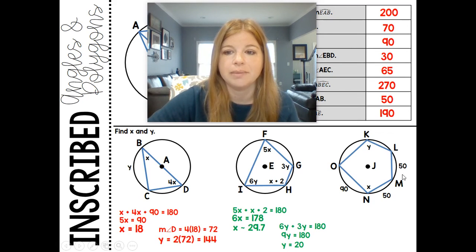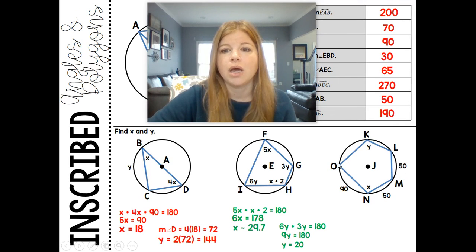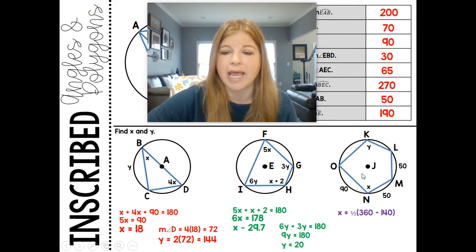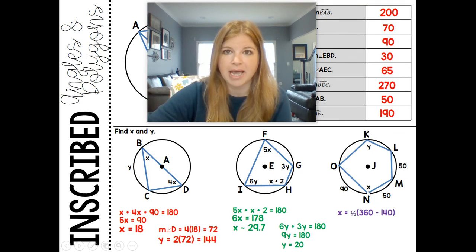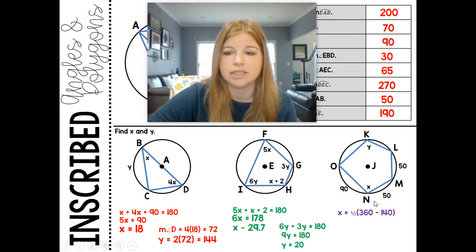Last one: an inscribed pentagon. We want to find the measure of angle X. X opens up to arc OKL. We don't know what OK and L are, but we know the measures of the rest of the angles. If this is 90 plus 50 plus 50, which is 190, then I can figure out OKL. X equals half the measure of 360 subtracted by this 140. If OKM opens up to X, it's 360 minus 140, then take half of it, and X equals 110 degrees.